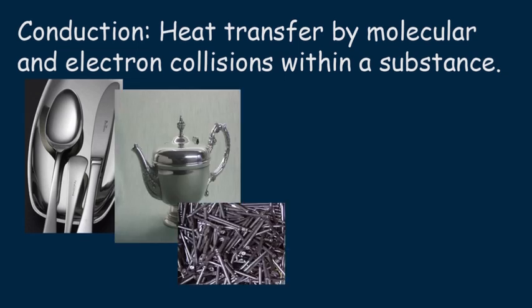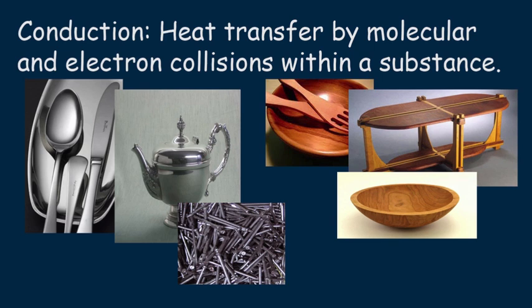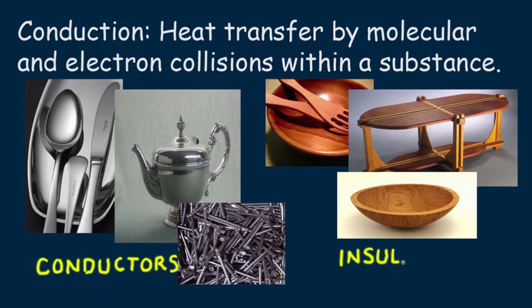In contrast, electrons in wood are not free to wander throughout the wood. The atoms in wood are fixed in place and grab onto the electrons which don't easily migrate from atom to atom. So wood conducts heat very slowly. We say metals are conductors and materials such as wood are insulators.